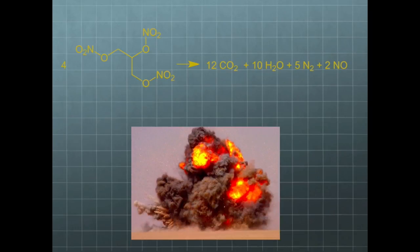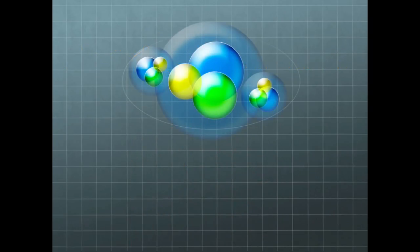Nitroglycerin is unstable, and a slight impact or friction can cause it to spontaneously detonate. When it explodes, a lot of energy is released as the atoms rearrange to form new molecules with strong and stable bonds, like nitrogen and carbon dioxide. Thank you for watching.